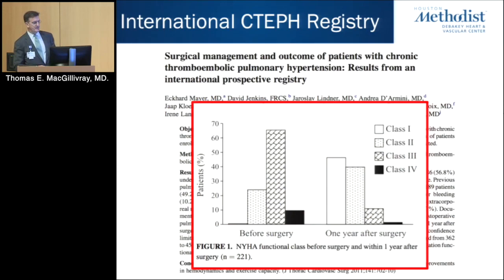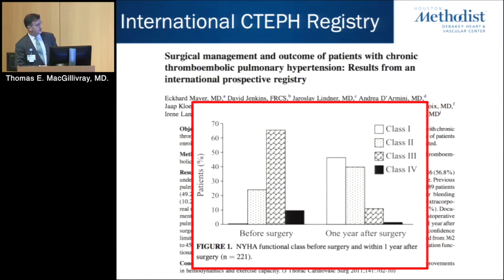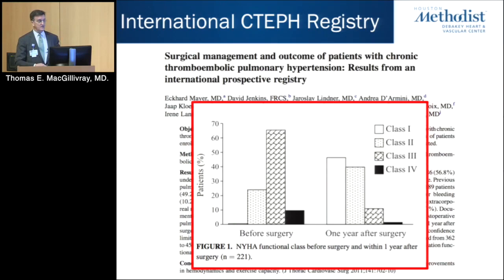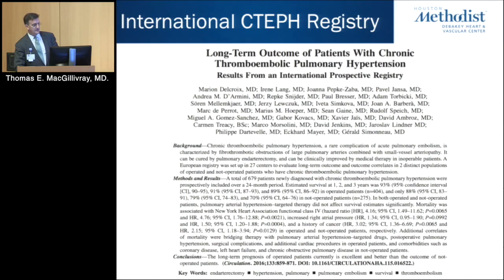Not only do these patients live longer and have improved hemodynamics, but if you look at New York Heart Association class, they're functionally much better. Preoperatively, the majority are NYHA class 2 and 3, and some are class 4. After the operation, the majority are NYHA class 1 or 2. Those functional improvements — both in the UCSD experience and in the international registry experience — are sustained.